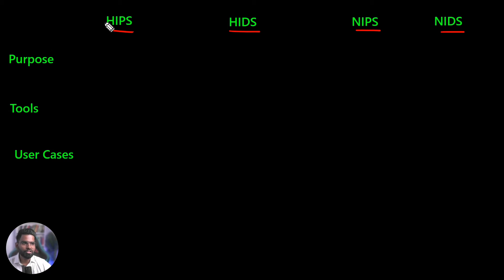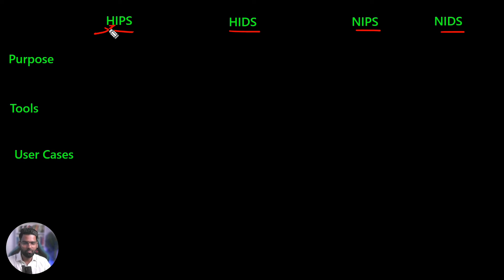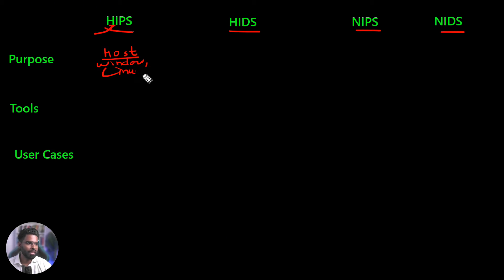Let's start with HIPS — H stands for host. There are two kinds of IPS or IDS: host-based and network-based. Host-based IPS is installed on the host, computer, server, or any endpoint. NIPS is installed in the network where we have live network traffic going on, maybe connected to a switch or firewall. The purpose of HIPS is to protect the host from local threats — it could be your Windows machine or Linux machine. It is helpful to detect brute force attacks happening on the system itself — just like your antivirus.